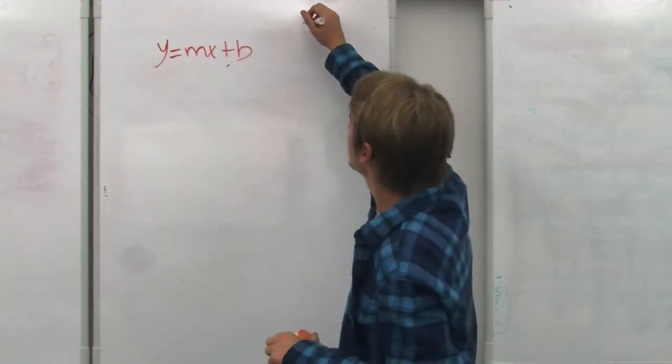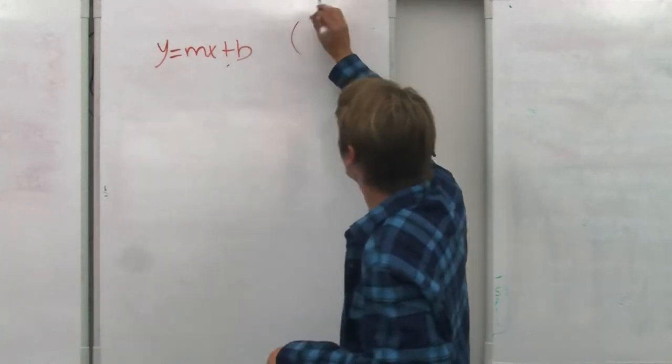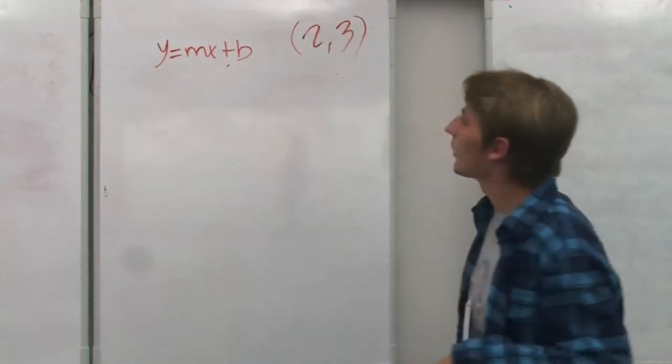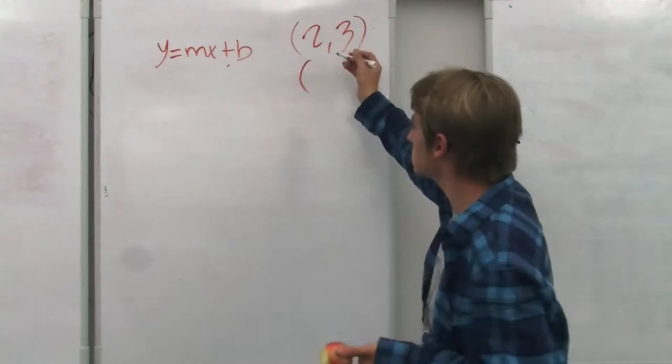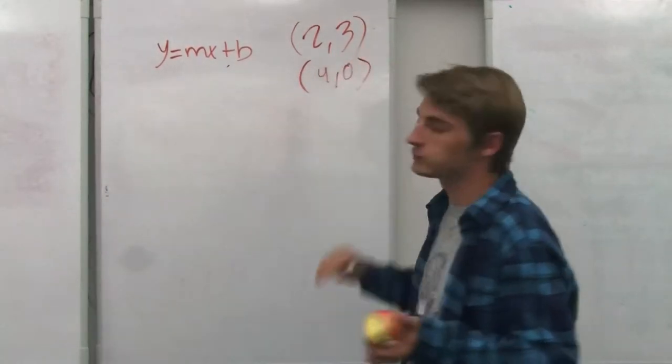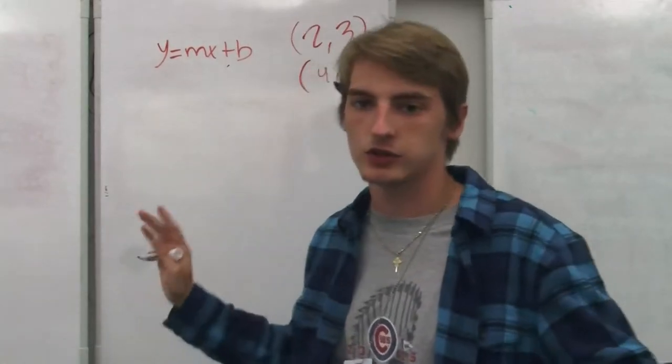Say you have a given point. Let's have 2, 3. And the second point, 4, 0. The line passes through those points.